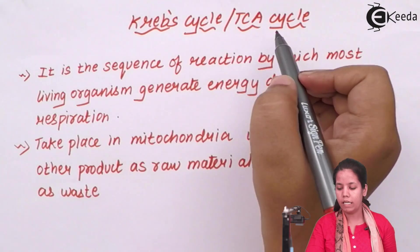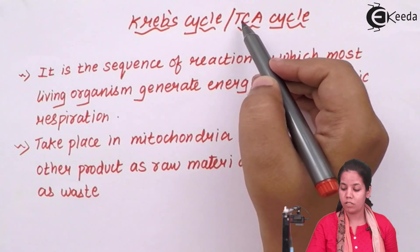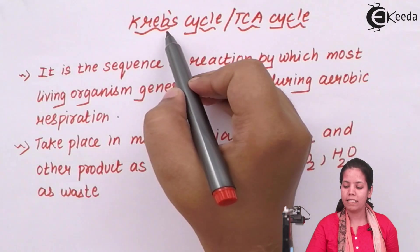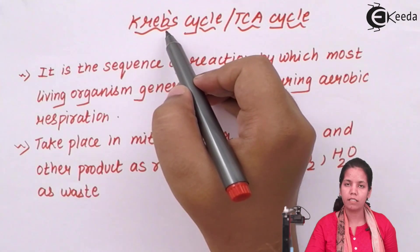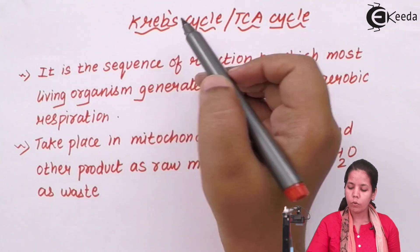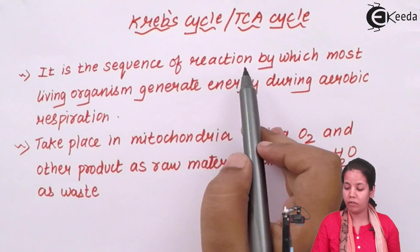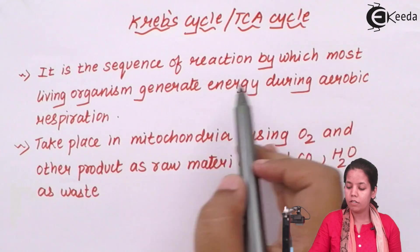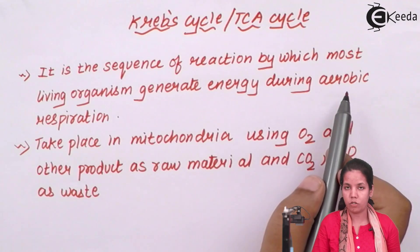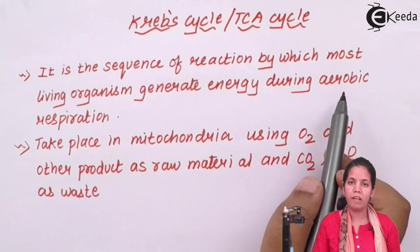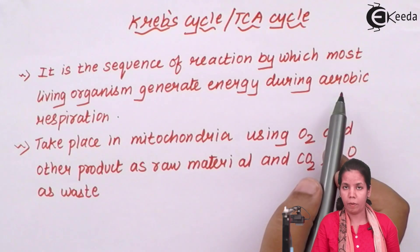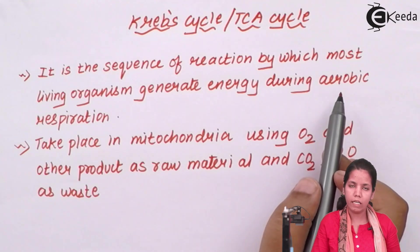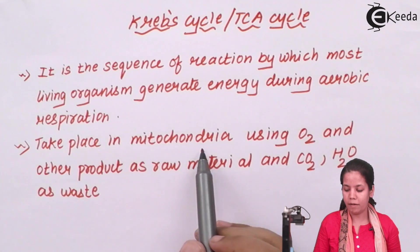Krebs cycle or TCA cycle — when I say TCA cycle it means tricarboxylic acid cycle, and Hans Krebs was the scientist who actually developed this cycle. The Krebs cycle is nothing but a sequence of reactions by which most living organisms, including plants, generate energy during aerobic respiration. It is linked with glycolysis, which we studied previously — the conversion of glucose to pyruvate is part of aerobic respiration, along with the Krebs cycle or TCA cycle. This process takes place inside the mitochondria.